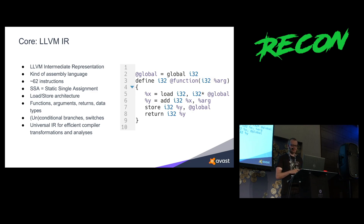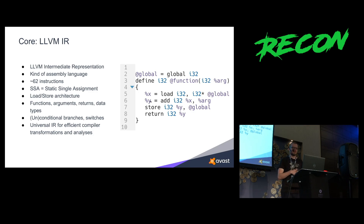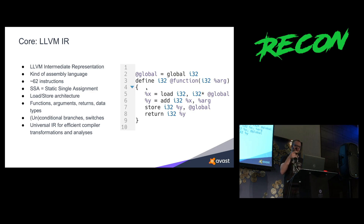Here is an LLVM IR example demonstrating a few things. A global variable is defined. There is a function with a return type and one argument. The body of the function loads the global variable into a temporary variable named x, adds x with the argument, stores the result to y, stores it back to the global variable, and returns it. SSA means these variables x and y are temporary and cannot be redefined — there is only one place of definition for each. SSA doesn't apply to allocated memory such as globals or locally allocated stack variables, which are operated with load and store instructions.